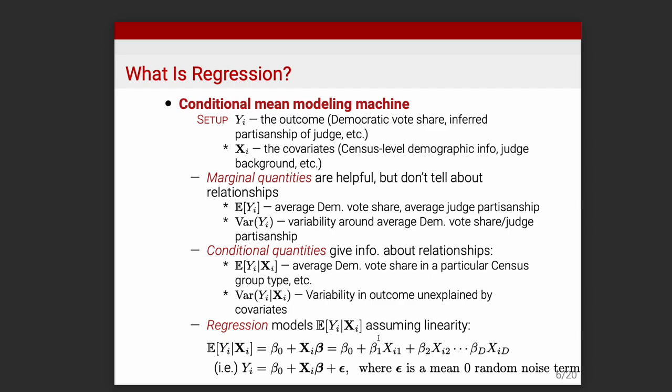Another answer is you can take a linear regression and make it non-linear. Later in the semester we'll talk about how you can add non-linearities by including quadratic and other polynomial or non-linear terms in the regression. You can always take something non-linear and make it linear by adding non-linear transformations of the x's as new covariates, further enriching the expressive capacity of your model.